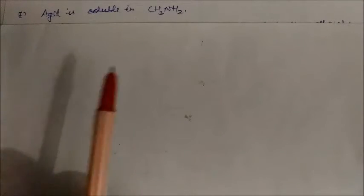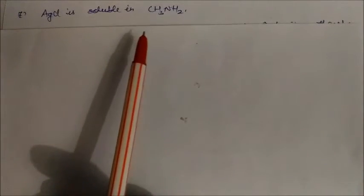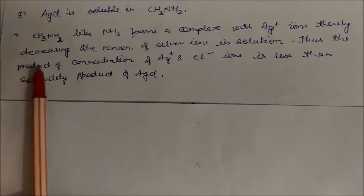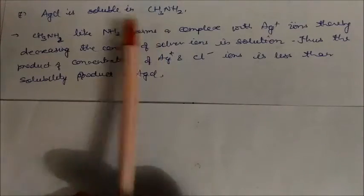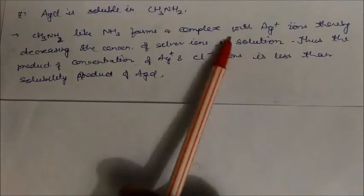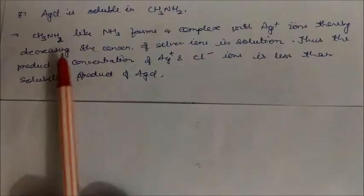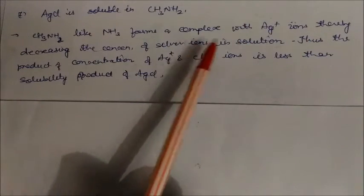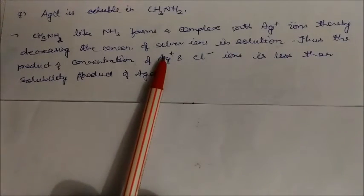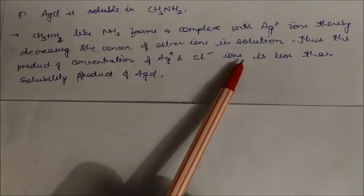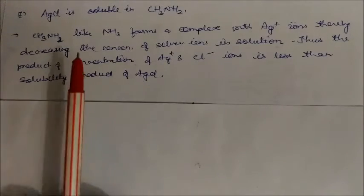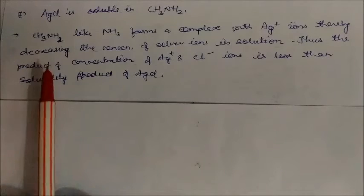AgCl is soluble in methylamine. Methylamine is like ammonia — it forms a complex with silver ions, thereby decreasing the concentration of Ag⁺ ions in solution. So the product of concentrations of Ag⁺ and Cl⁻ becomes less than the solubility product of AgCl, which is why AgCl is soluble in methylamine.